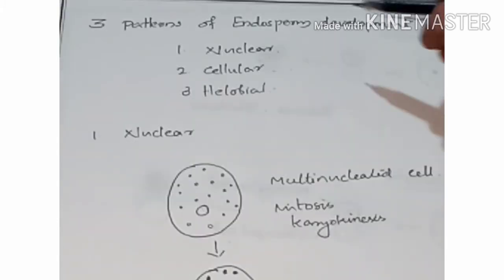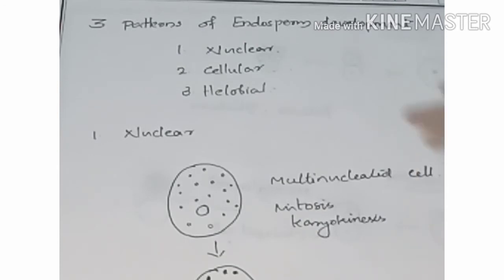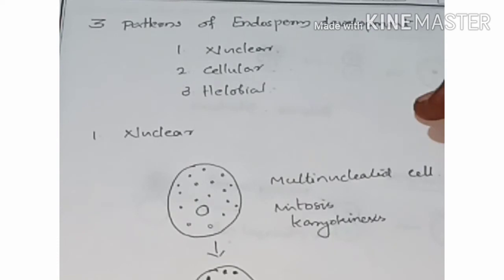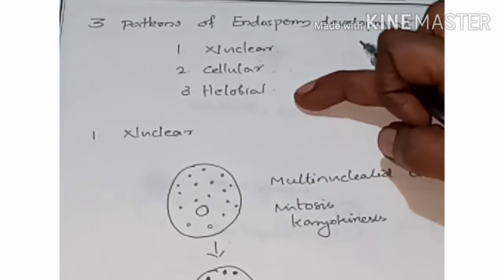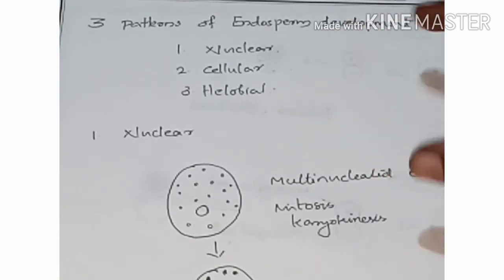Endosperm development follows three main patterns: the first is nuclear endosperm development, the second is cellular endosperm development, and the third is helobial endosperm development.